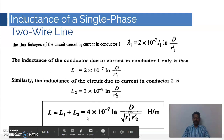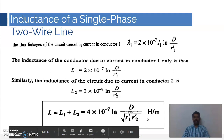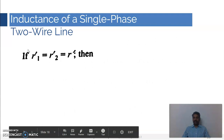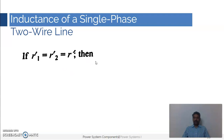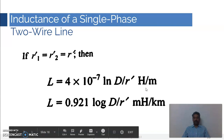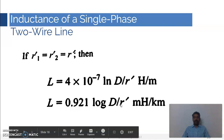Taking the sum of L1 and L2 gives L = 4 × 10⁻⁷ × ln(d / √(r1' · r2')). To simplify further, if both conductors have the same cross-sectional area then r1' equals r2' equals r', and the expression becomes L = 4 × 10⁻⁷ × ln(d / r') henry per meter, or equivalently L = 0.921 × log₁₀(d / r') millihenry per kilometer. Be careful with units when using natural log versus log base 10.